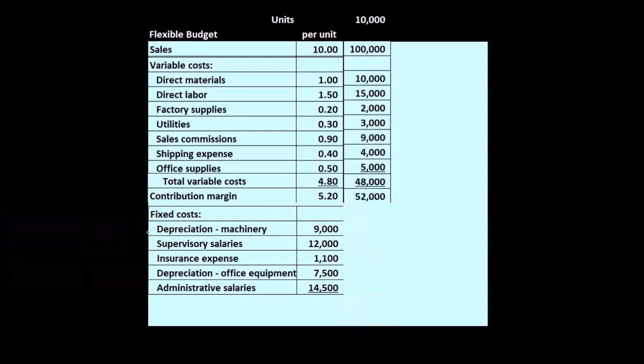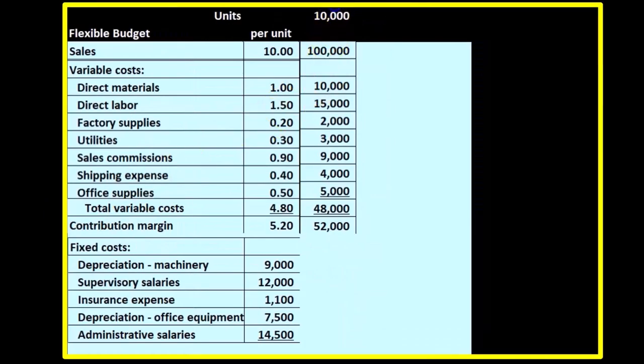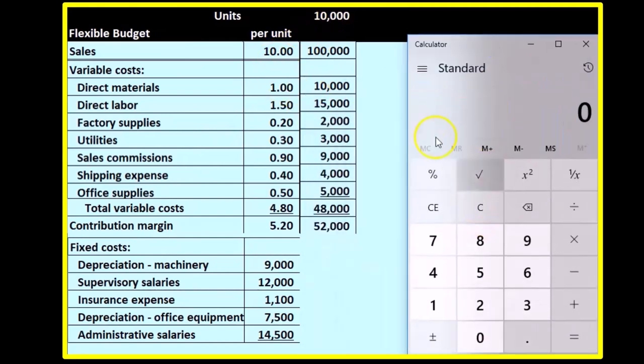Based on the 10,000 units, we can take our sales of $10 per unit times 10,000 units—so $10 times 10,000—that gives us $100,000.